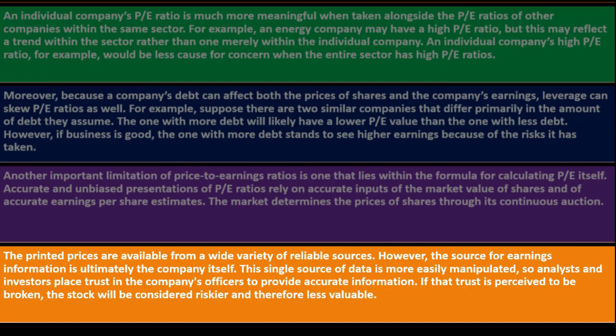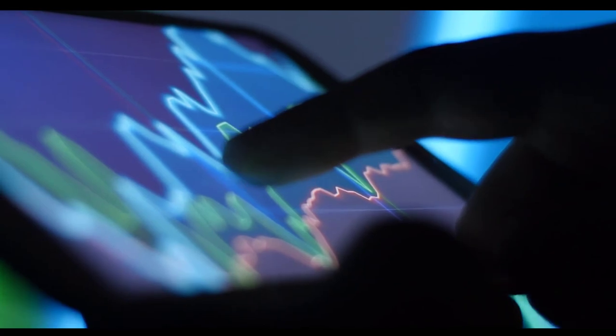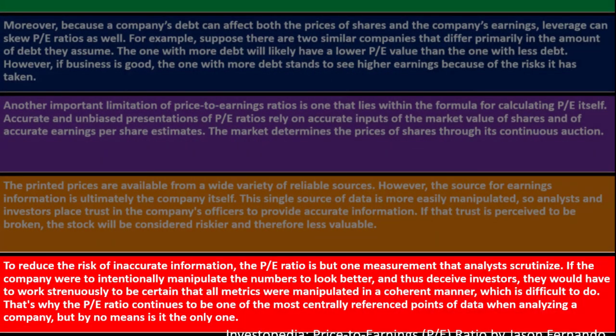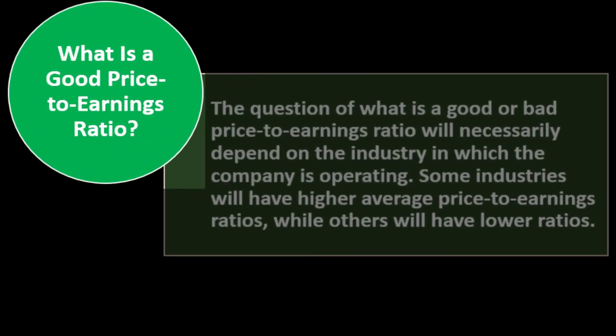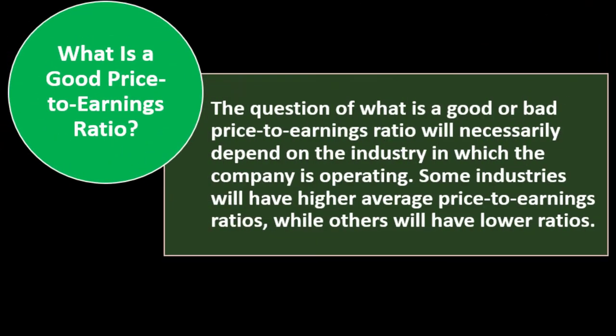Another important limitation lies within the PE formula itself. Accurate PE ratios rely on accurate inputs of share market value and accurate EPS estimates. While market-determined share prices are available from many reliable sources, the source of earnings information is ultimately the company itself — a single source more easily manipulated. Analysts and investors must trust the company to provide accurate information. If that trust is broken, the stock is considered riskier and less valuable. To reduce the risk of inaccurate information, PE ratio is just one measurement analysts scrutinize; if a company were to manipulate numbers, it would have to manipulate all metrics coherently, which is difficult to do.